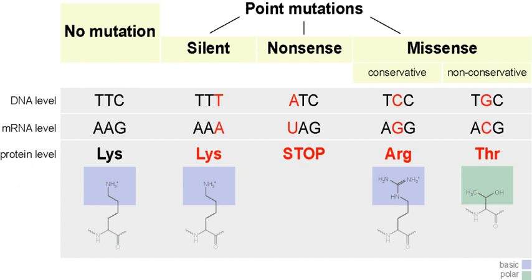There are multiple ways for point mutations to occur. First, ultraviolet light and higher frequency light are capable of ionizing electrons, which in turn can affect DNA. Reactive oxygen molecules with free radicals, which are a byproduct of cellular metabolism, can also be very harmful to DNA. These reactants can lead to both single-stranded DNA breaks and double-stranded DNA breaks.